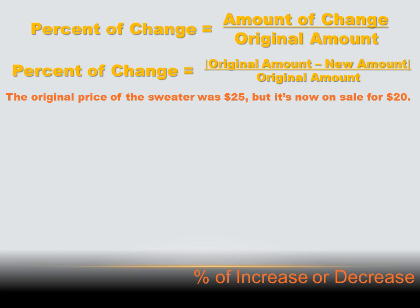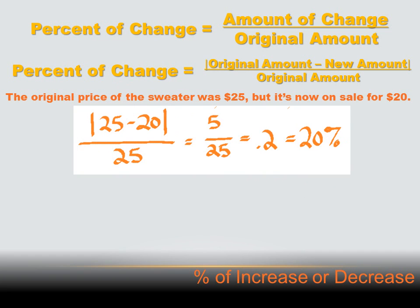Let's try a problem. The original price of the sweater was $25, but now it's on sale for $20. The first thing you've got to ask yourself is: did the price go up or did it go down? The original price was $25 and it went down to $20, so it's a percentage decrease. We get the absolute value of the difference: $25 minus $20, which is $5. We divide that by the original price, $25. So we get $5 over $25, which as a decimal is 0.2, or 20%.